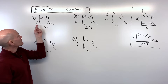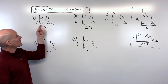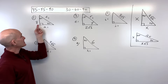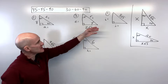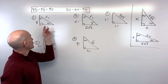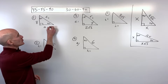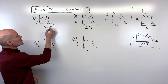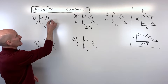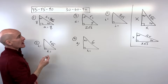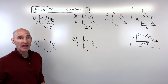For the first example, we have a 45-45-90 triangle and they're giving us a leg of 8. So x equals 8, which means side A — the other leg — must also be 8. To find the hypotenuse, we take the leg and multiply by the square root of 2, so side B is 8√2.